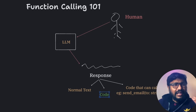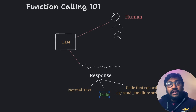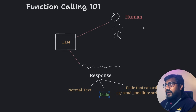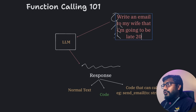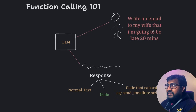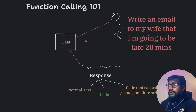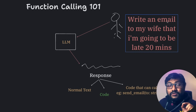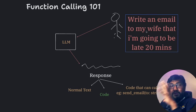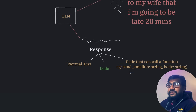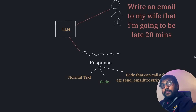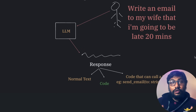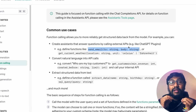For example, let's say the human tells the AI: 'Write an email to my wife that I'm going to be late 20 minutes to home.' The AI needs to know that this is an email-writing task and it has access to the API. So it needs to create a structured response — something like: send_email, the 'to' field should be my wife's email ID, and the body should be 'I'm going to be late 20 minutes.'